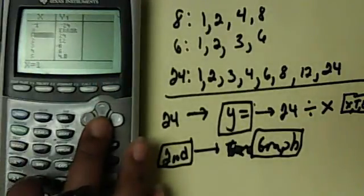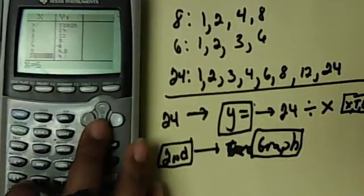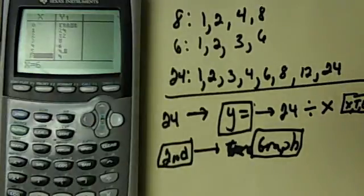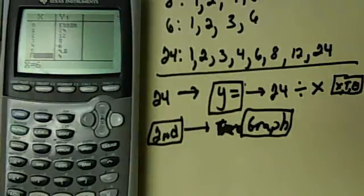And graph takes me to the table if I hit the second button. And there are my factors. You start with 1 and 24, 2 and 12, 3 and 8, 4 and 6, 5 doesn't go, and then I'm back to 6 and 4, which I already have. So that's a much faster way to list the factors.